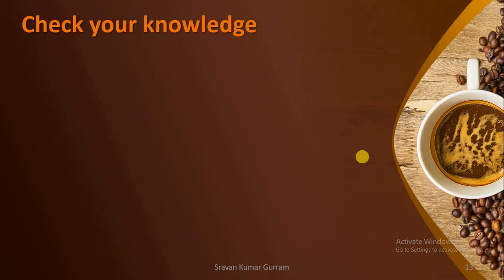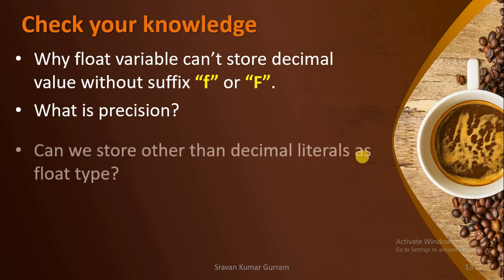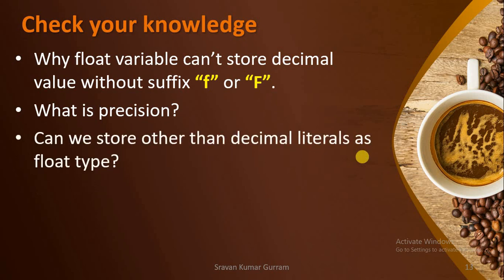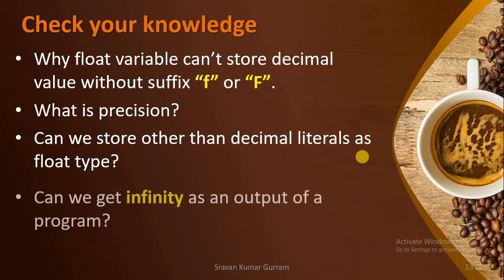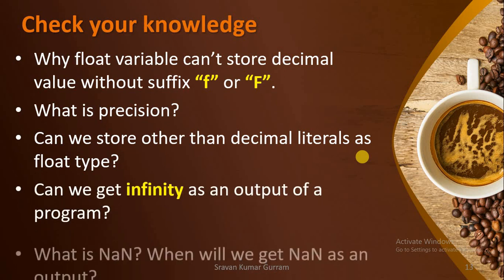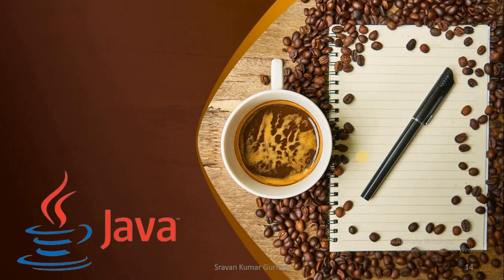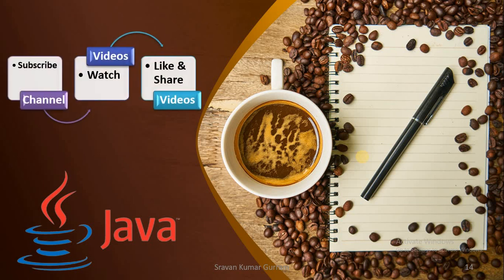Check your knowledge from this video: Why can't a float variable store a decimal value without suffix F? What is precision? Can we store other than decimal literals as float type? Can we get infinity as an output? What is NaN and when do we get NaN as an output? If this video is useful to you, please subscribe to the channel, watch and share it. Thank you.